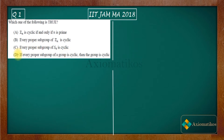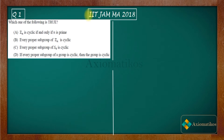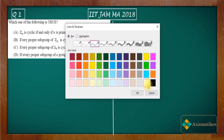Option C says every proper subgroup of S4 is cyclic. Option D says if every proper subgroup of a group is cyclic, then the group is cyclic. What I suggest is: just pick the correct one directly. Don't try to think of counter-examples to discard three options first, because the correct option here is very easy to see.